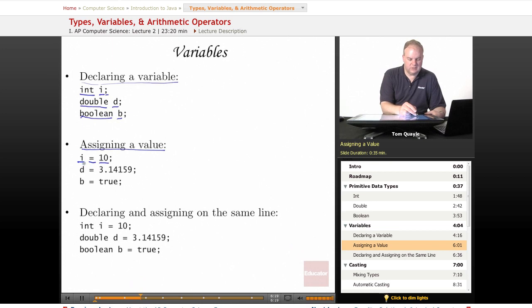So in this case, i is an int, so we can assign it an int value. D was declared a double, so we can assign it a double value, such as this. B was a boolean, so B can only be assigned either true or false.